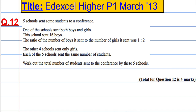Question 12. Five schools sent some students to a conference. One of the schools sent both boys and girls. This school sent 16 boys. The ratio of the number of boys it sent to the number of girls it sent was one to two. The other four schools sent only girls, and each of the five schools sent the same number of students. Work out the total number of students sent to the conference by these five schools.